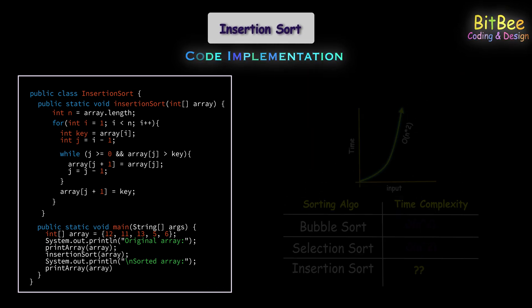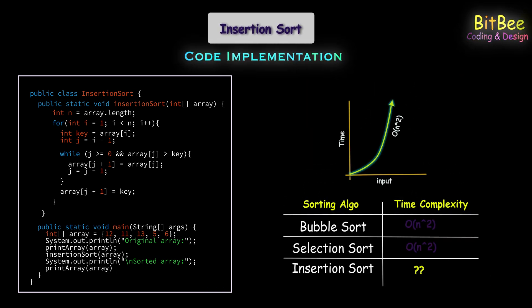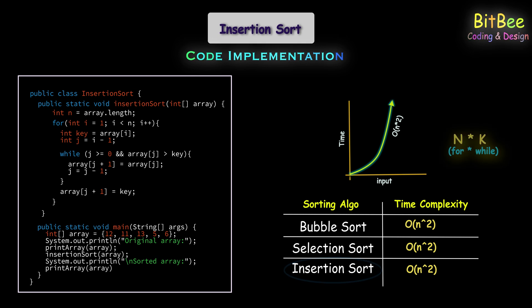Coming to the time complexity, we can see insertion sort also follows the same time complexity, that is O of n squared, like bubble sort and selection sort. This is because of n times k iterations, where n is the number of outer iterations and k is inner iterations.